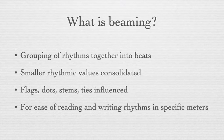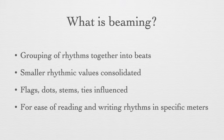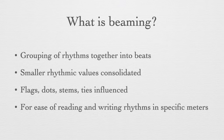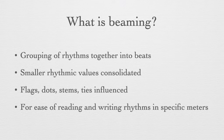What is beaming? When we beam rhythmic durations together, we are grouping them into beats. These smaller rhythms are consolidated under one beam in order to make the rhythm clearer to read. Notational devices like flags, dots, stems, and ties are all influenced based on how they are beamed, and may look differently if they are not part of a beamed group. The beaming that occurs within a beat is specific to certain meters and can look differently based on these meters.